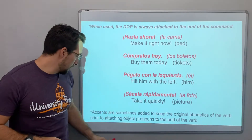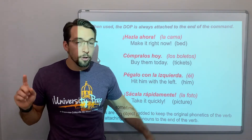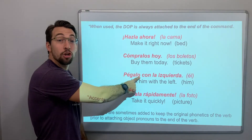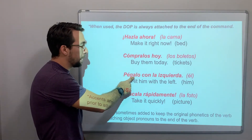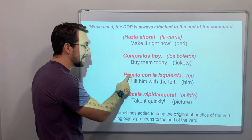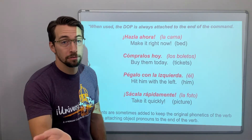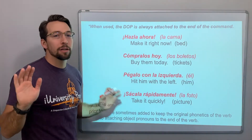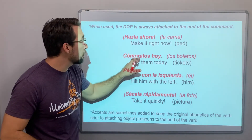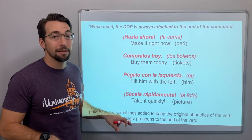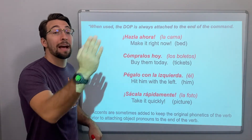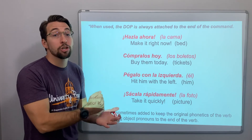Accents are sometimes added to keep the original phonetics of the verb — the sounds — prior to attaching the object pronouns to the end. So pega, but when you add lo it would be pégalo. That doesn't sound right without the accent, so we add it to keep the original sound. Don't get hung up on accents, but that's why you see compralos, sacala — these accents. When you add a direct object pronoun or indirect object pronoun, you often add an accent to the original root verb.